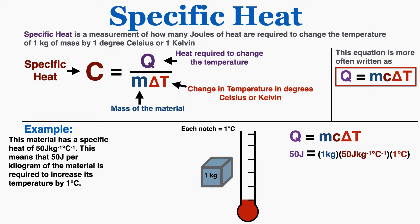A material's specific heat tells you how many joules are required to change the temperature of 1 kilogram of that material by 1 degree Celsius. As an example, we can pretend that this blue material in the bottom center has a specific heat of 50 joules per kilogram degree Celsius. This means that for every 1 degree Celsius we want to change, we have to add or subtract 50 joules of energy per kilogram of the material present.